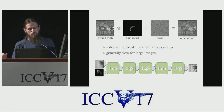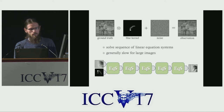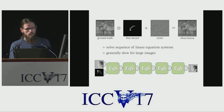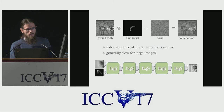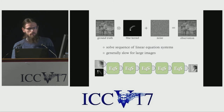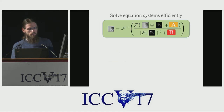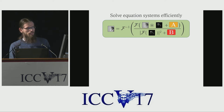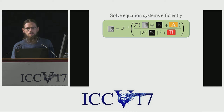Many popular deconvolution methods obtain the de-blurred image by solving a sequence of linear equation systems. These equation systems are very large and can be very time consuming to solve, hence this approach generally does not scale to large megapixel sized images. However, it is possible to solve each equation system very efficiently if we assume circular boundary conditions — each system can then be diagonalized in Fourier space and solved in closed form, which does scale to large images.